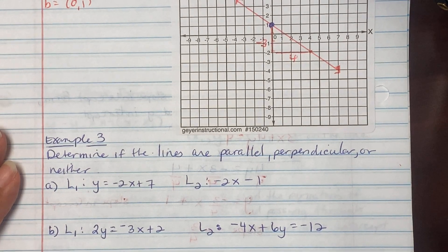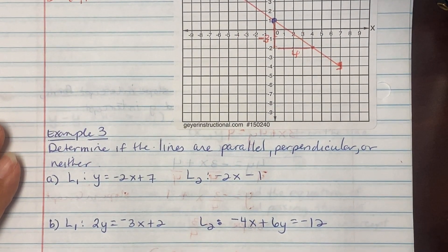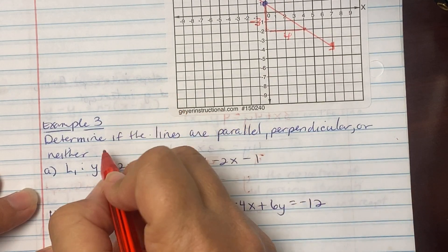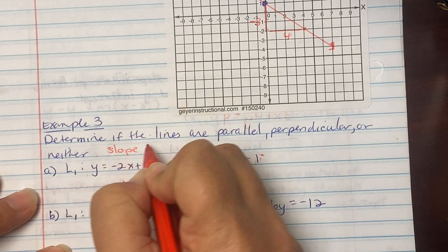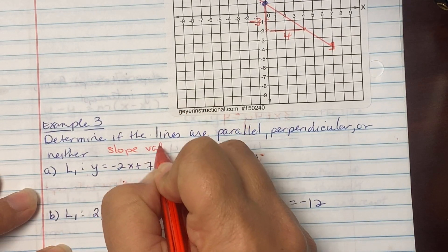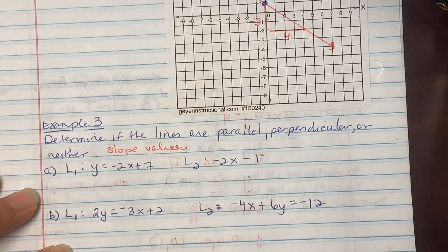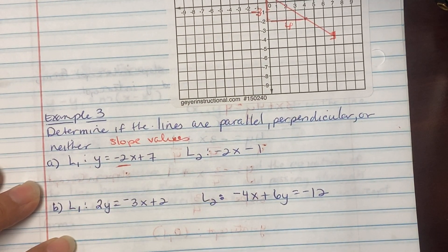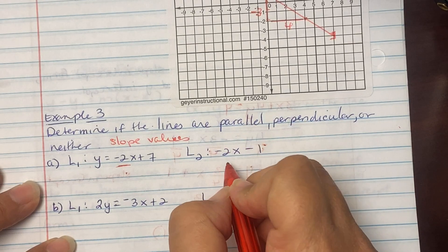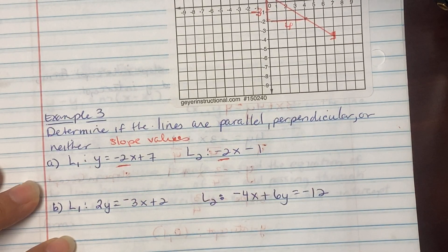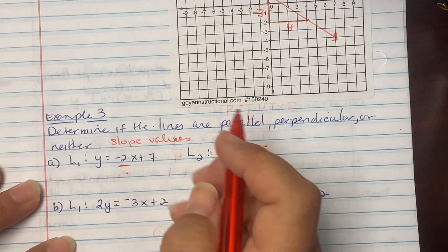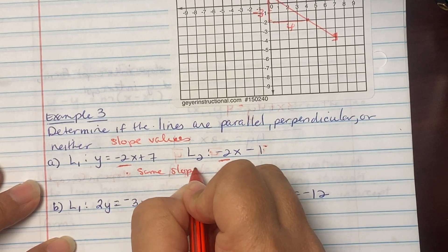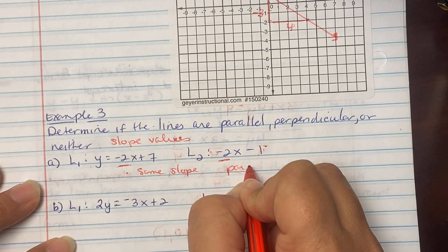Example 3: Determine if the lines are parallel, perpendicular, or neither. Remember, you're comparing slope values. Part a: Line 1 has a slope of negative two, Line 2 also has a slope of negative two. Same slope — these are parallel lines.